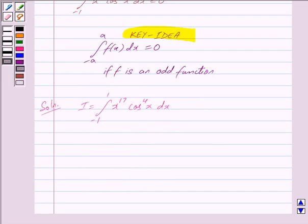Now if we take x raised to the power 17 into cos raised to the power 4x as one function, say f, then we know that an odd function into an even function is equal to an odd function. So we get f is an odd function here and also we have the limit is from minus 1 to 1.